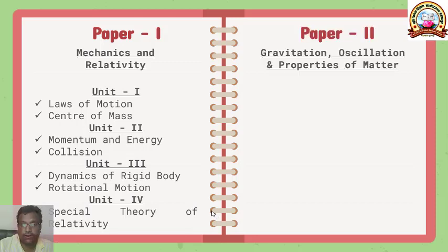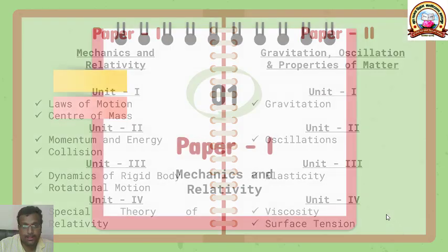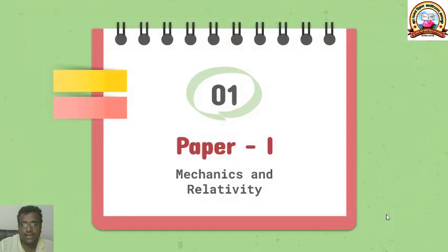In the second paper we are going to study gravitation, oscillations and properties of matter. First unit is totally dedicated to gravitation and Newton's law of gravitation. Second unit is for oscillations, third unit is for elasticity, and fourth unit is for viscosity and surface tension. Now we will see the detailed unit-wise discussion of Paper 1 and Paper 2.